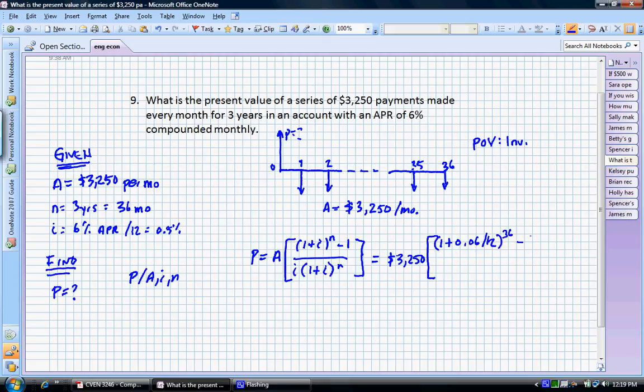We're going to subtract 1. It's required by the formula. We have 0.06 over 12 multiplied by (1 plus 0.06 over 12) raised to the 36.